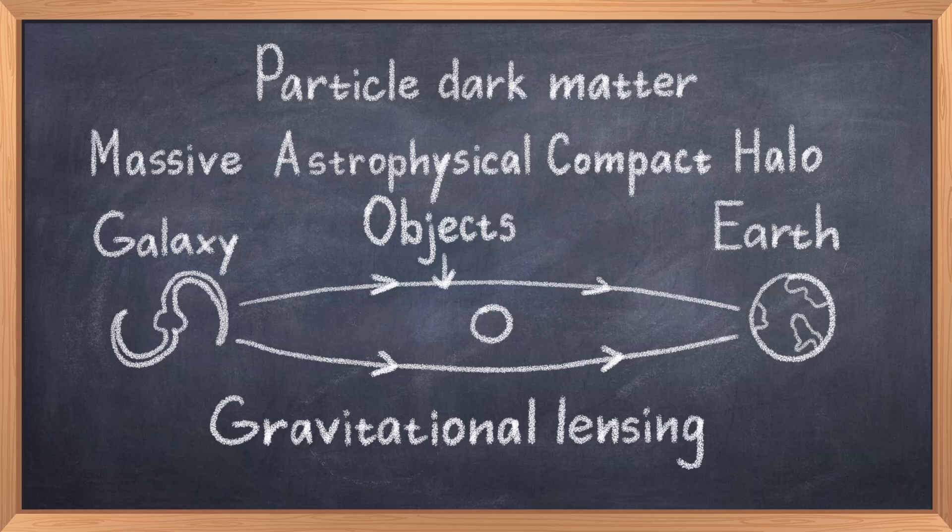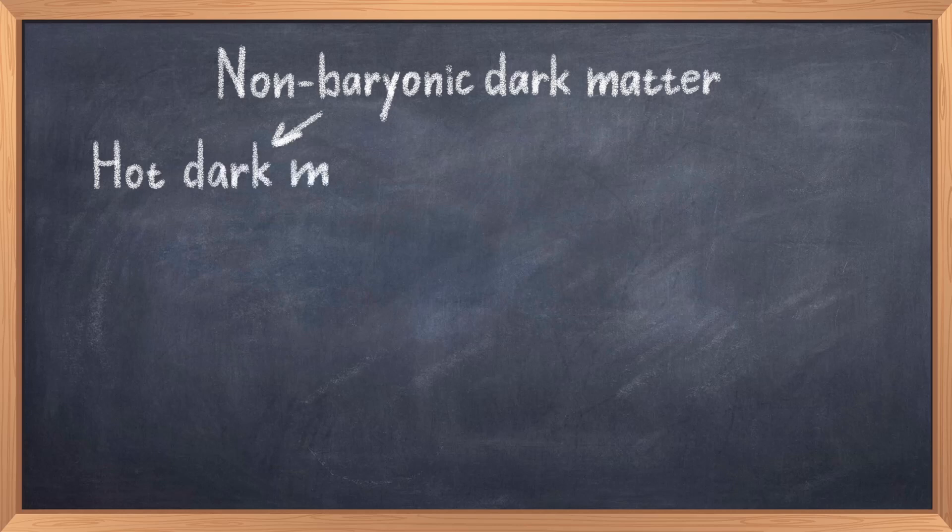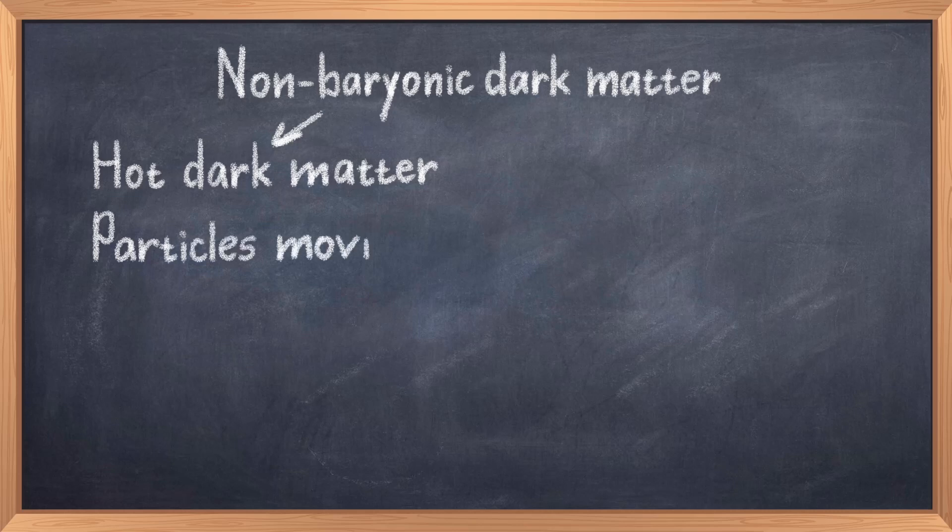This leads us to what we call non-baryonic dark matter. This category can be divided into two parts, hot dark matter and cold dark matter. Hot and cold means fast and slow. Thus hot dark matter is just particles that move at a speed comparable to the speed of light, and cold dark matter moves much slower.